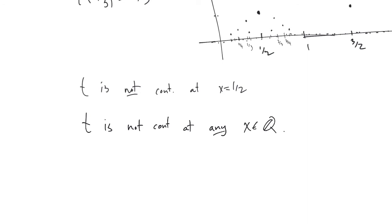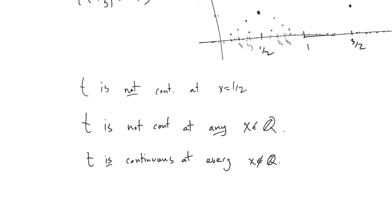Just because I said it that way, the next question becomes obvious: what about the irrational numbers? This function seems so crazy — it seems like maybe it's just not continuous at all. But I'm here to tell you: T is continuous at every irrational, at every x which is not in Q. This is the crazy thing about Thomae's function — it actually is continuous at every irrational.